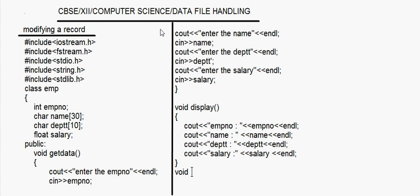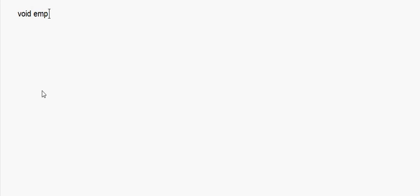Now I'm going to declare the prototype of a function called modify — void modify — and then I close the class. We'll be defining this modify function outside the class, so since it has been declared inside the class and not defined, we'll use the scope resolution operator: void EMP::modify.